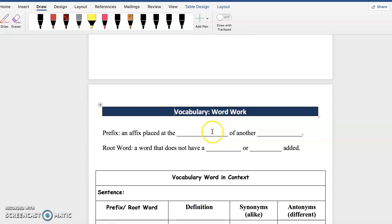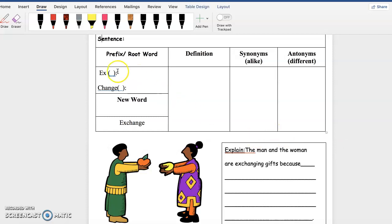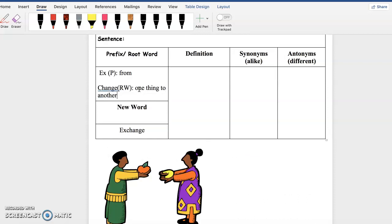We're still working on prefixes, so we're gonna go ahead and begin. A prefix we know is an affix placed at the beginning of another word. A root word is a word that does not have a prefix or a suffix added. Now the prefix that we're going over today is ex. That is our prefix for today, and then change would be our root word. So we know that prefixes have a separate meaning than the root word. Ex means from, and then change means one thing to another.